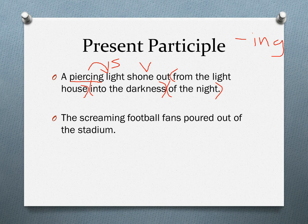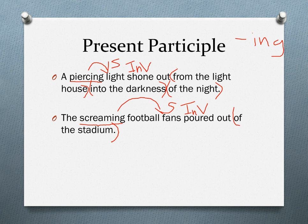Let's do the same pattern on the next sentence. 'Fans' is the subject, 'poured' is the verb, and there's a prepositional phrase. It has no direct object, making it an intransitive verb. 'Scream' is a verb — 'screaming' ends in '-ing,' and if it's acting like an adjective describing 'fans,' which it is, that makes it a present participle.